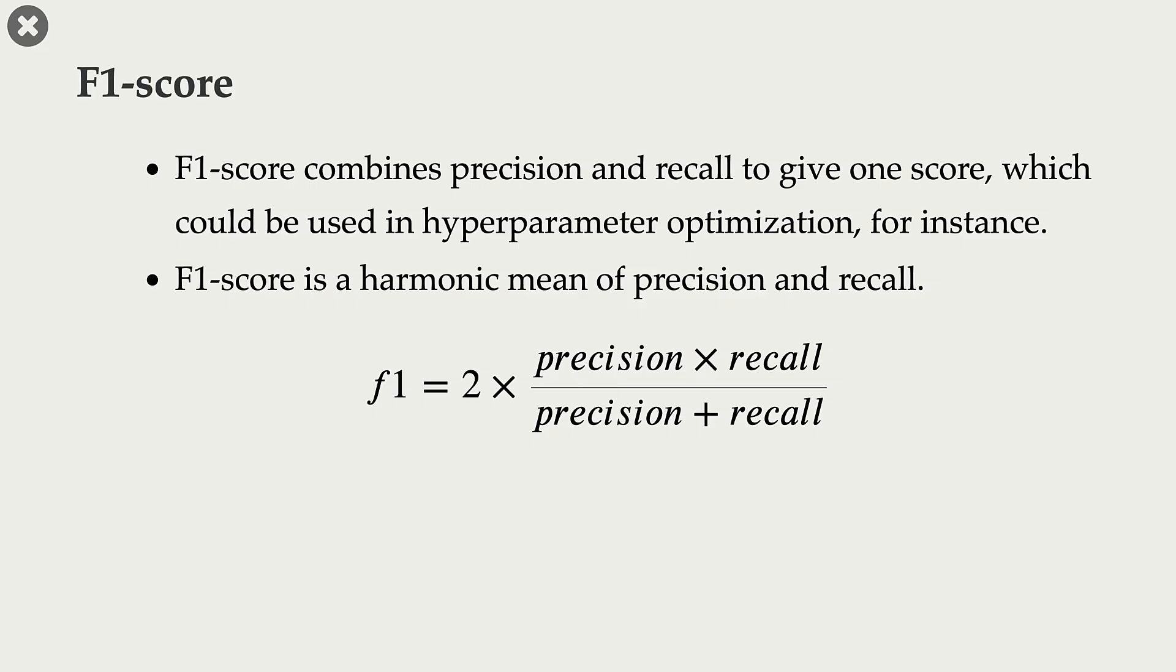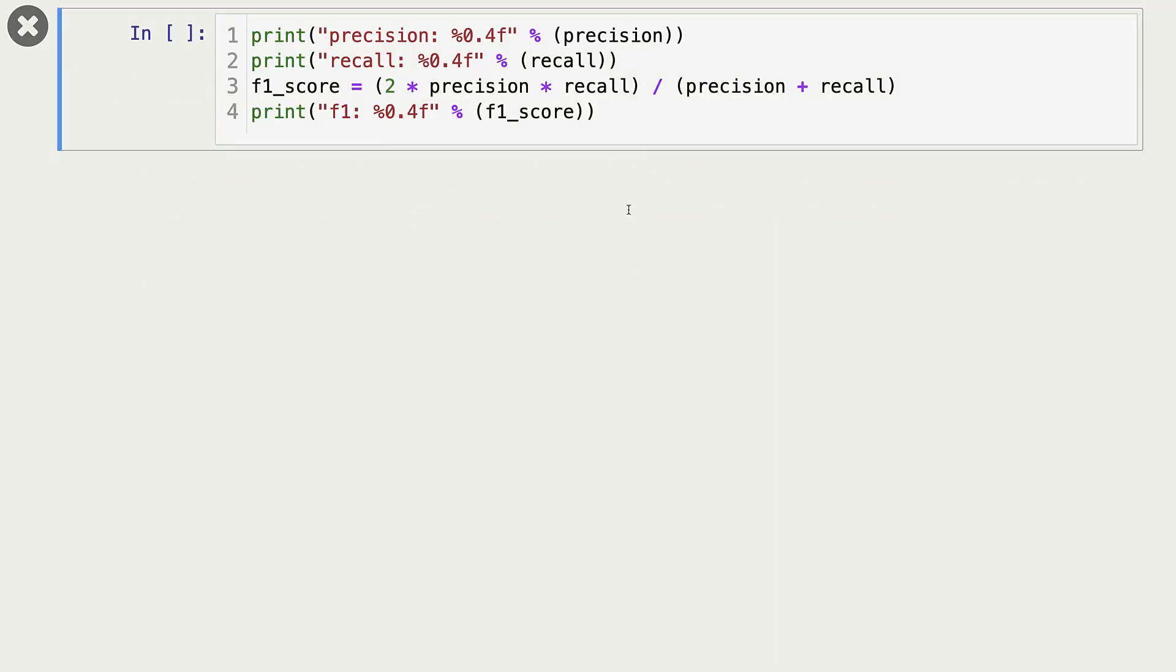Very often, you need one number or one score to use in, say, hyperparameter optimization. F1 score combines precision and recall and gives us this number. It uses this formula to calculate the score. And let's calculate it on our own. In our case, our F1 score is 0.7356.